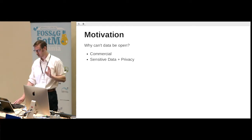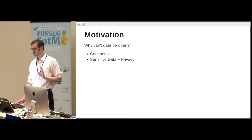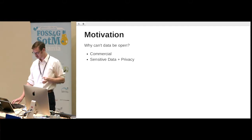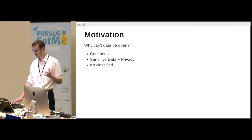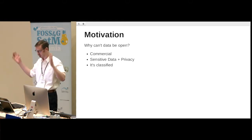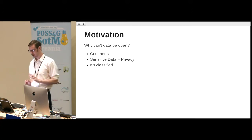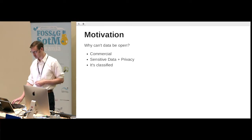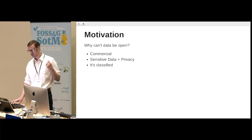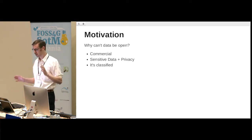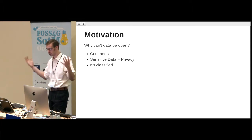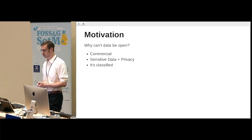The second reason is that the data may be sensitive in some way and we want to preserve privacy. The third might be that it's classified. I'm not concerned with that third reason, but it does come up in GIS. It's really the second reason that's the topic of this talk.